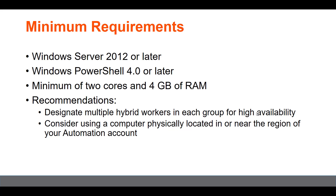The minimum requirements for a hybrid worker server are: Windows Server 2012 or later, PowerShell 4.0 installed, at least two cores, and 4 GB of RAM. It is recommended that you always designate multiple hybrid workers in each hybrid worker group for high availability. Also consider using a computer physically located in or near the region of your automation account.